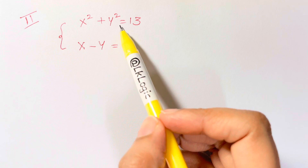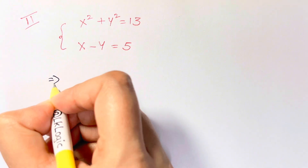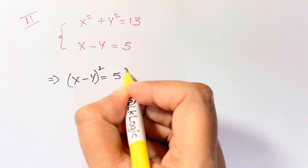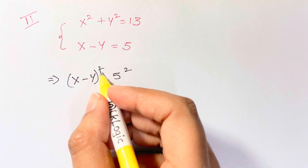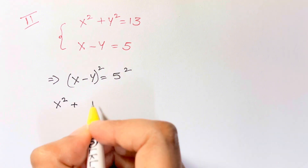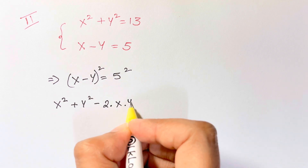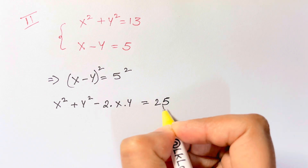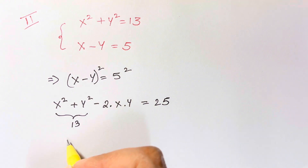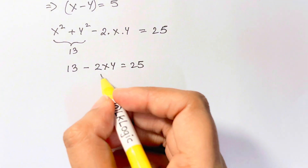Let's see how we're going to do with the second method. In this method you don't need the quadratic formula. What I'm going to do is take the second equation: x minus y is equal to 5, and just square it. This is in the form of (a minus b) whole squared, so the formula is a squared plus b squared minus 2ab. So: x squared plus y squared minus 2xy is equal to 5 squared, which is 25. Now you know x squared plus y squared from equation 1 is 13. So let me write down 13 minus 2xy is equal to 25.